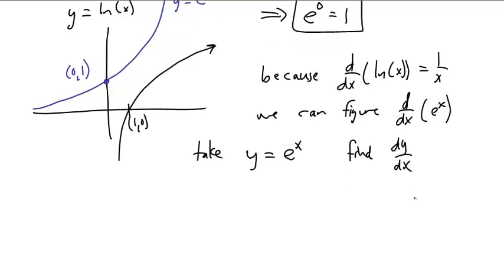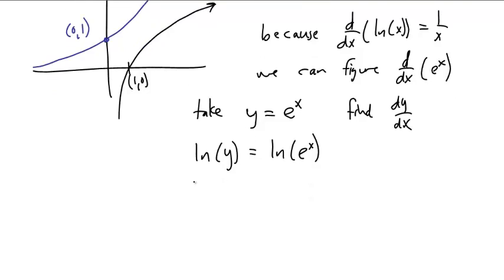We don't know the derivative of e to the x, but we do know that if we take the natural log of both sides, the natural log of y is the natural log of e to the x. We define e to the x to be the inverse of the natural log, so we get the natural log of y is just x.